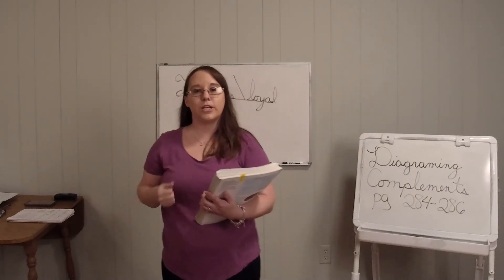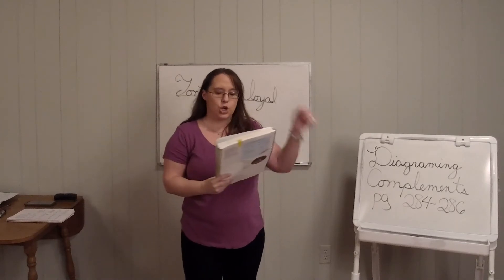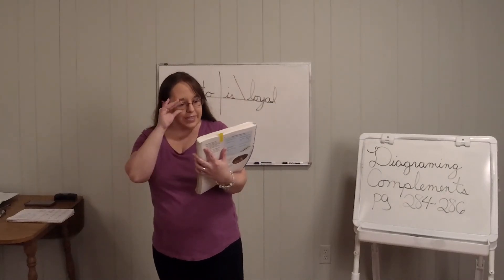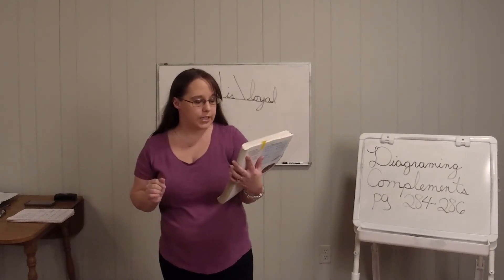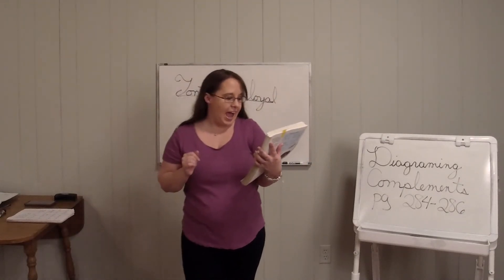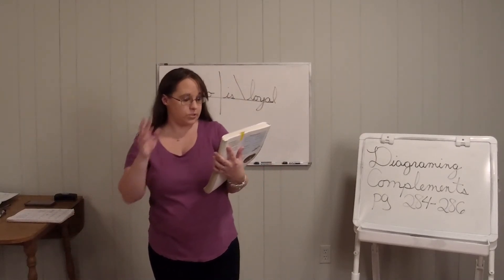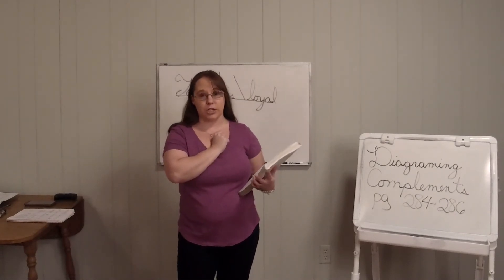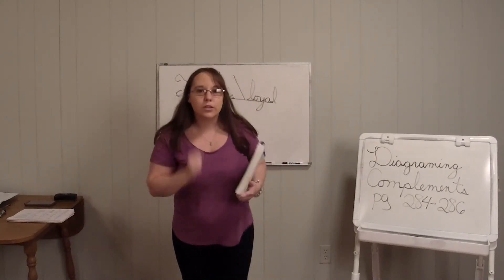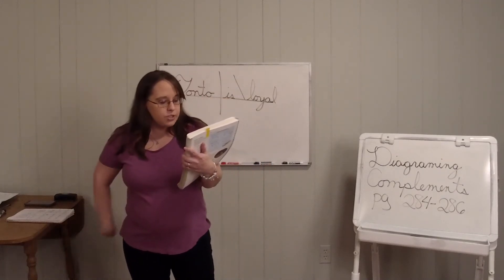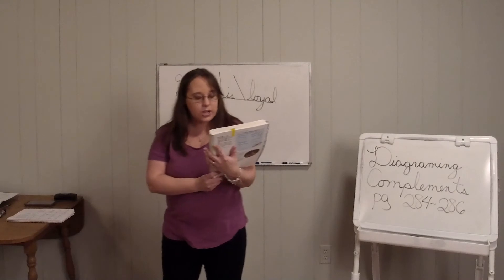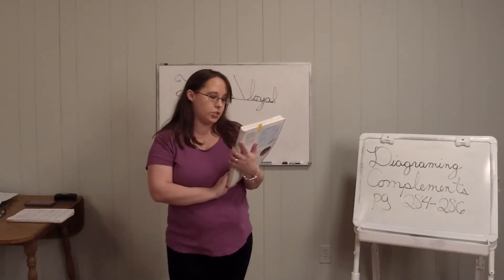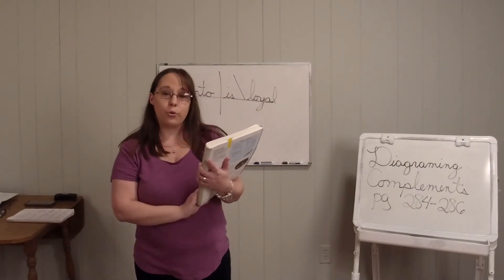Step one: underline the verb twice. You know how to underline the subject once and the verb twice. Step two: ask who or what before the verb to find the subject, then underline the subject once. Step three: say the subject and verb together and ask what or who to see if there is a complement. Step four: see if the verb is an action or linking verb to identify the complement. If the verb is an action verb, the complement is a direct object. If you have a direct object, you must also look between the action verb and the direct object for an indirect object — an indirect object is a noun or pronoun which answers the questions to whom, to what, for whom, or for what.